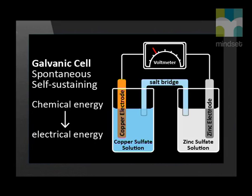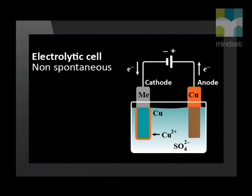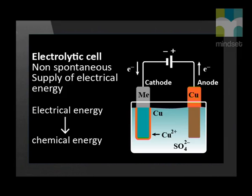The electrode reactions in a galvanic cell convert chemical energy into electrical energy. The battery is an example of such a cell. The second type of cell is a non-spontaneous reaction that occurs in electrolytic cells, where the electrode reactions are sustained by a supply of electrical energy.